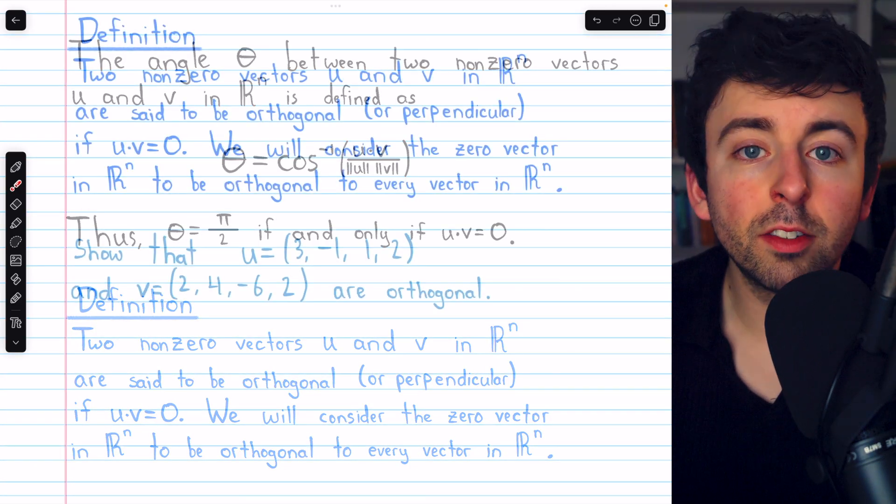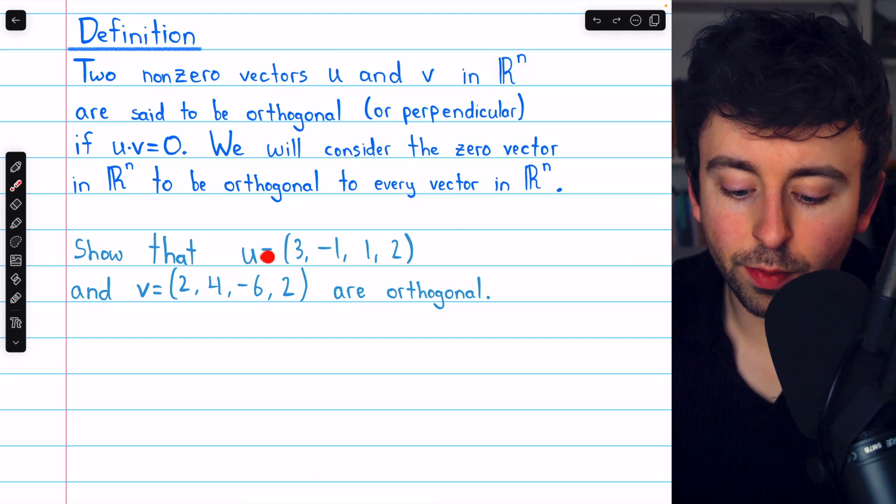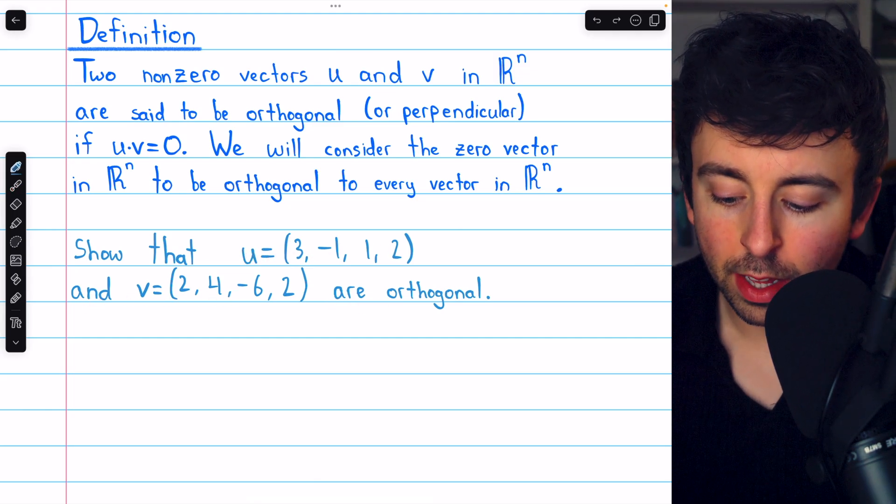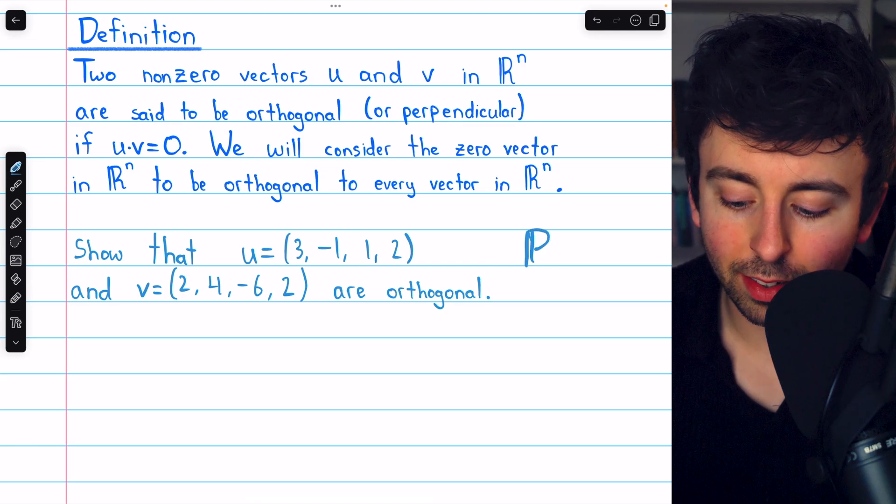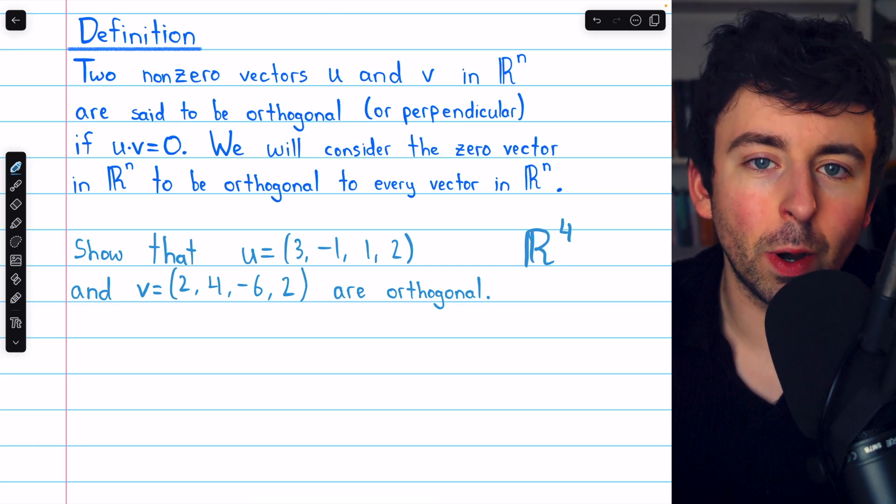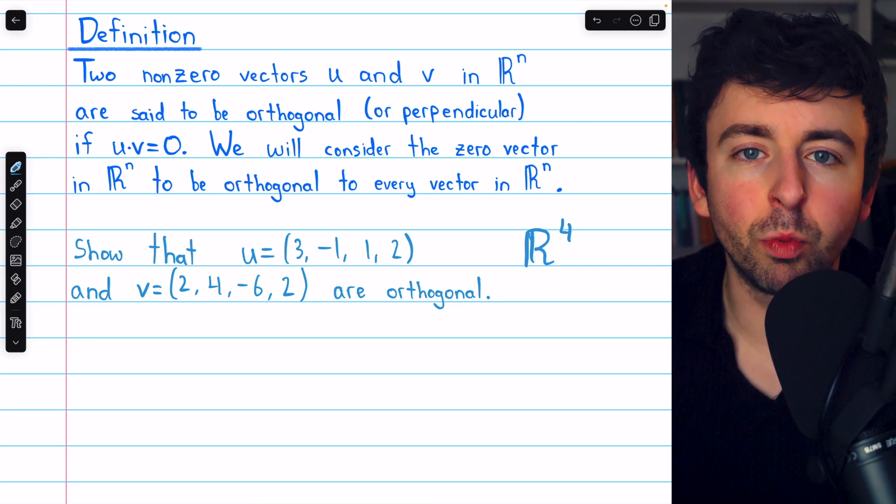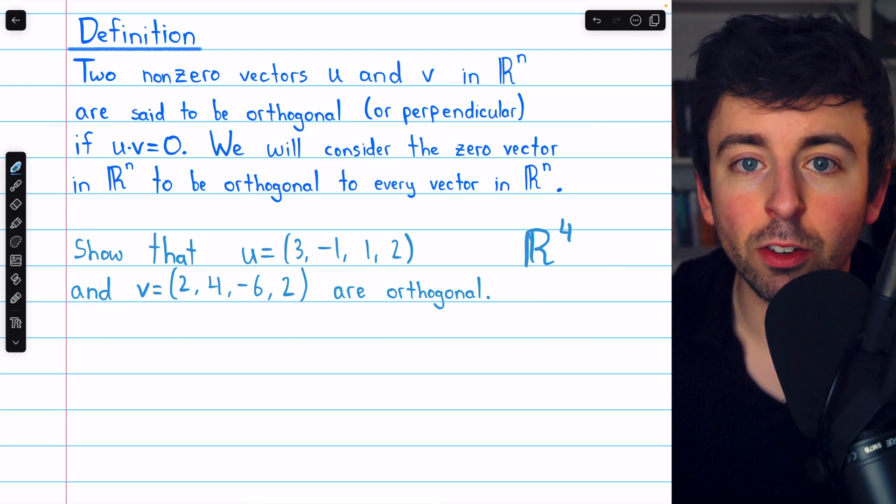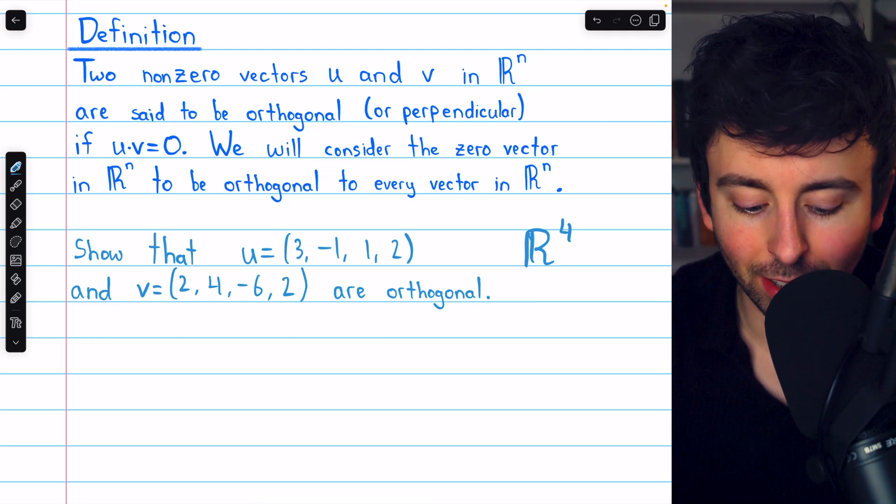Now let's see some examples. Suppose we want to show that this vector u and this vector v are orthogonal. These two vectors, of course, exist in R4, so this is not a space where we have a great picture in our heads of what it means for two vectors to be orthogonal. But now that we have our definition, we can show that they are orthogonal very easily.